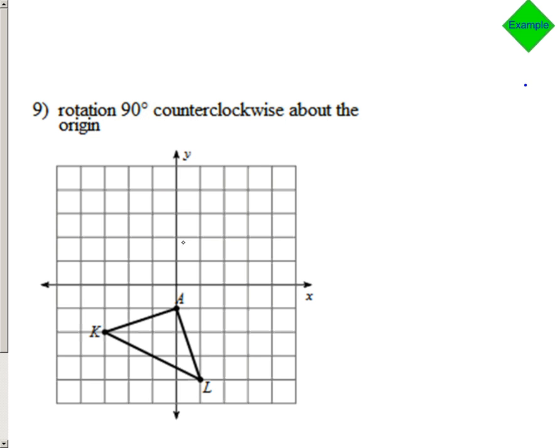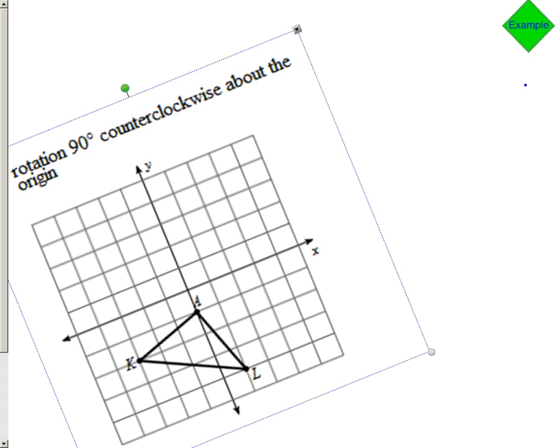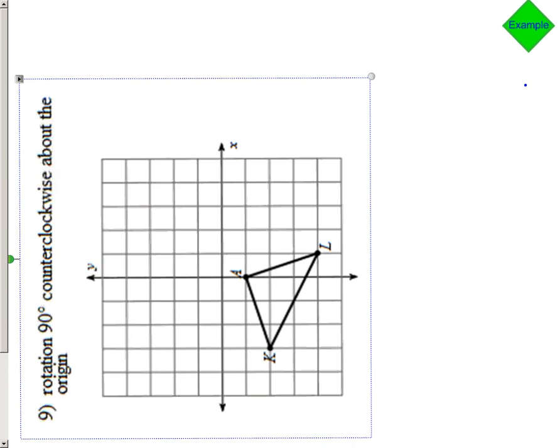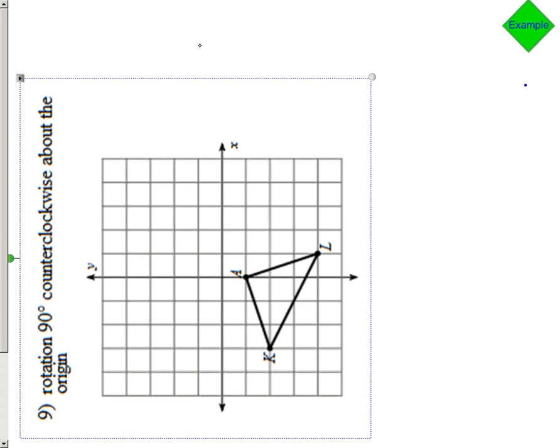Okay, so hopefully you've got your paper right there. And you see triangle KAL sitting right here. And it says rotate it 90 degrees counterclockwise. Well, counterclockwise means we're going to the left. If we turn it 90 degrees to the left, that's like one turn. There we go. We've turned this to the left. And so now your paper looks just like mine.